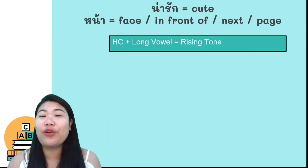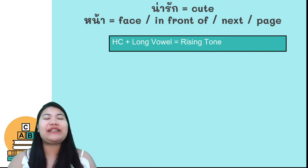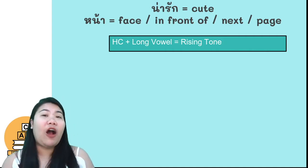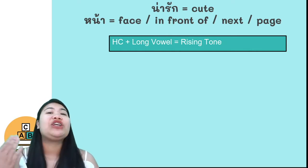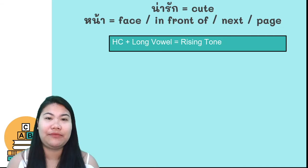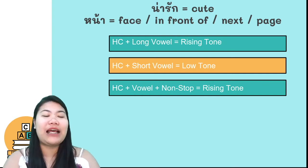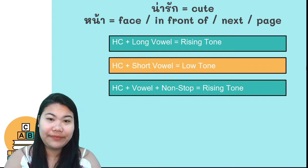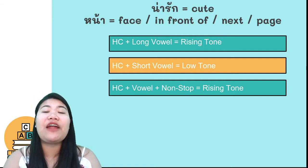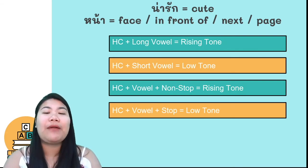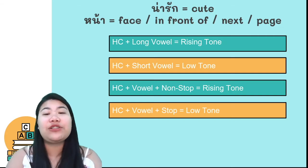Do you remember the tone rule in high class? When you see the ho heep leader rules, you should remember high class tone rules. When high class consonant plus long vowel, the tone is rising tone. When high class plus short vowel, the tone is low tone. When high class plus vowels plus non-stop final consonant, the tone is rising tone. When high class consonants plus any vowels plus stop final consonant, the tone is low tone.